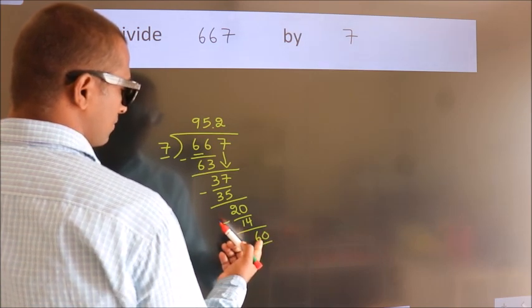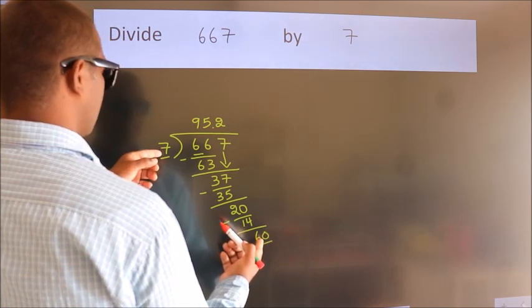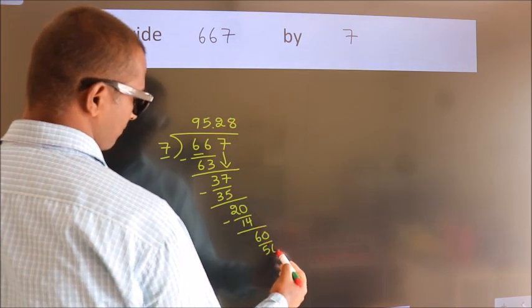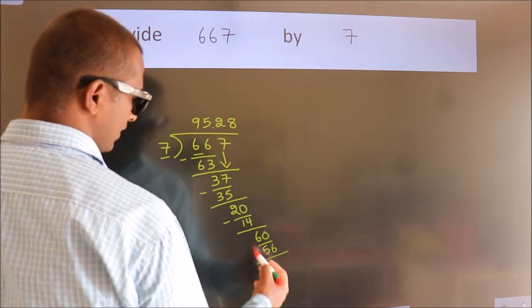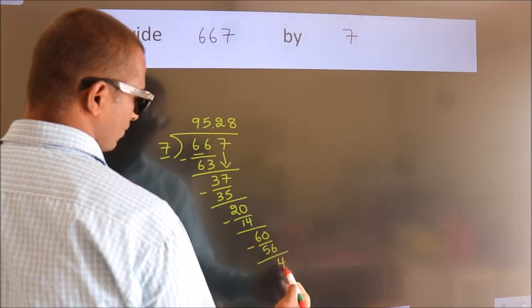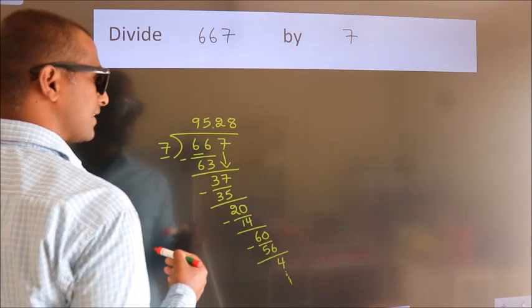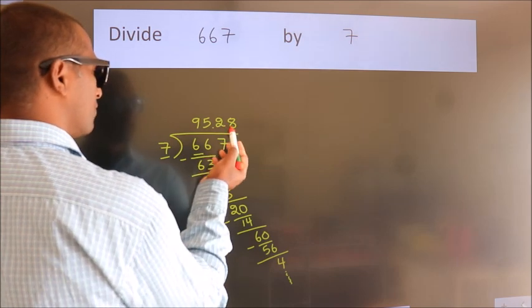A number close to 60 in the 7 table is 7 times 8, which is 56. Now we subtract and get 4. The division continues, but it is enough if we do up to 2 decimal places.